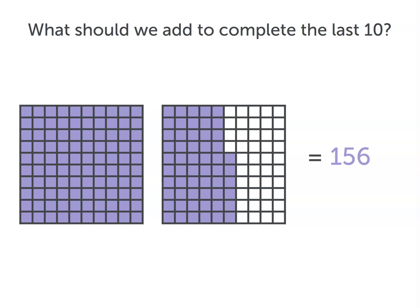What should we add to complete the last 10? This row right here. We need to fill in four squares. So 156 plus 4 is 160.